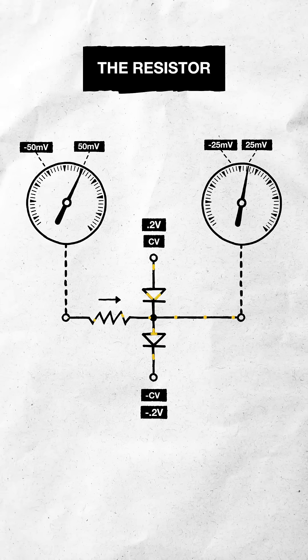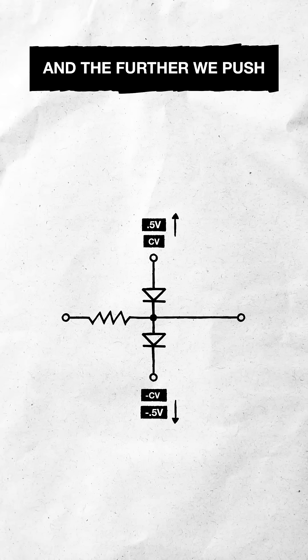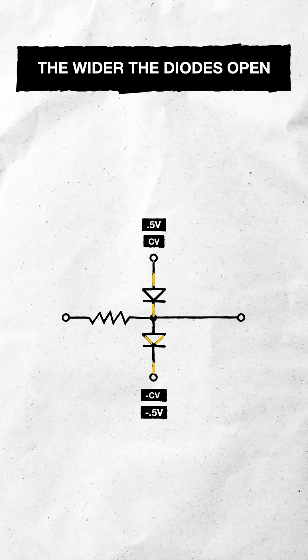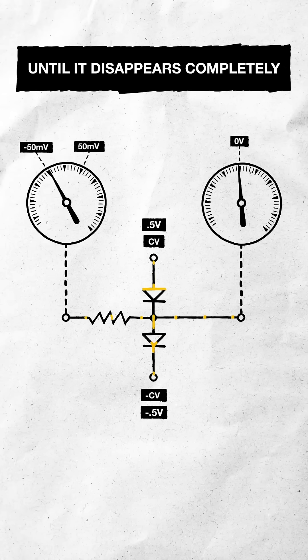That allows some current to flow through the resistor, reducing the voltage swing at the output. And the further we push the control voltages apart, the wider the diodes open and the more the signal fades out, until it disappears completely.